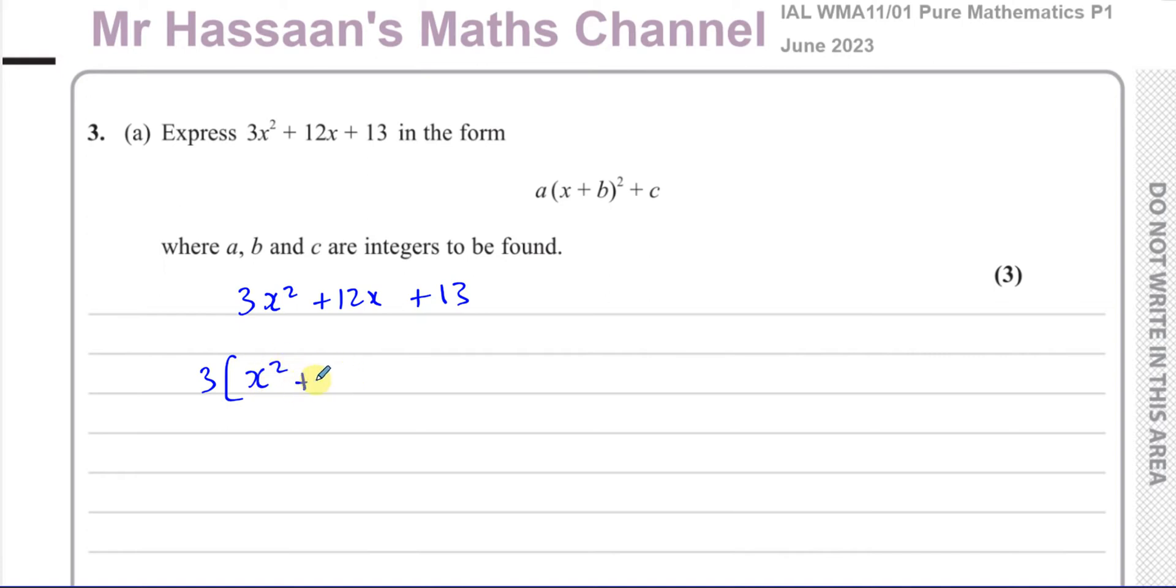So x² plus, and if I've taken out 3 from here, it's like I've divided it by 3 and then written the factor outside. So I'm going to do the same for this. I'm going to divide the 12 by 3, which gives me 4. That's 4x and plus 13. So I've just prepared it now for completing the square. I haven't actually started completing the square yet.